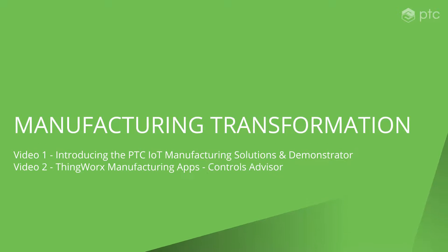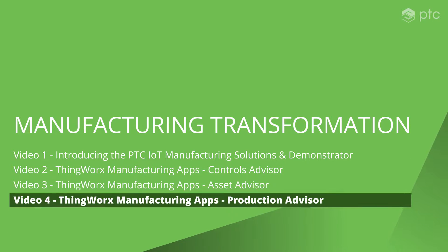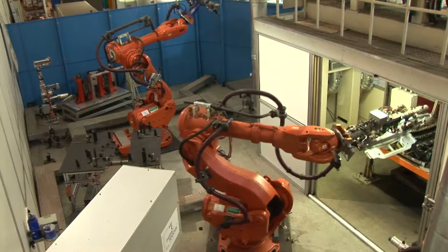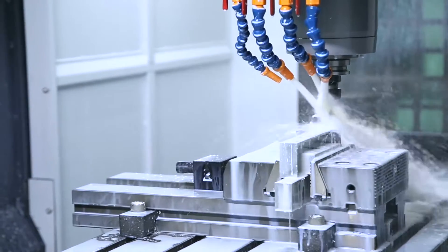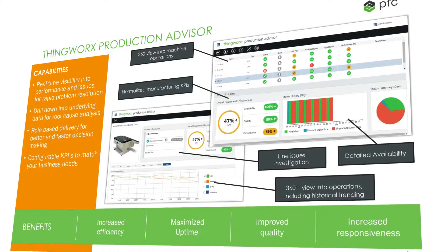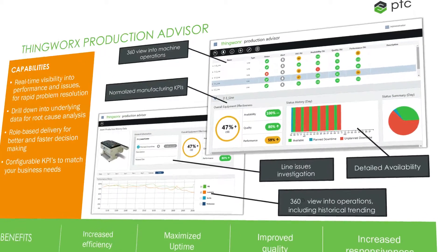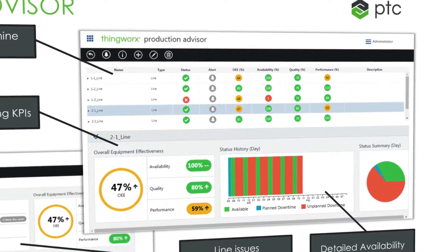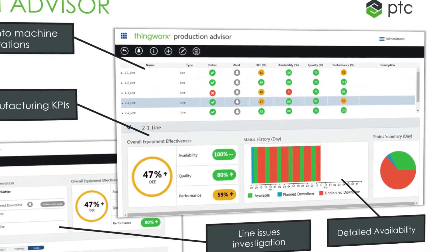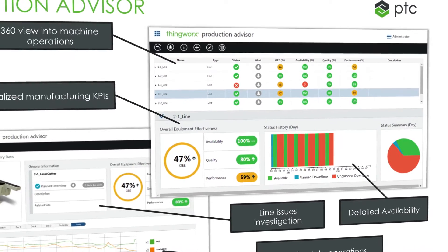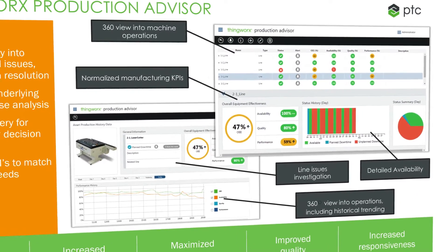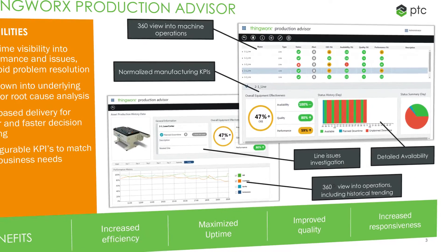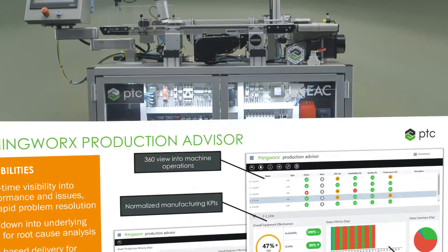With unified connectivity to disparate factory assets and business systems, ThingWorx Production Advisor brings a new level of visibility and flexibility into production performance monitoring and issue detection. Built on the ThingWorx IoT platform, this powerful app helps companies make decisions quickly by connecting and unifying different sources of internal and external data to deliver unified connectivity and real-time issue identification in a role-based view specifically designed for plant managers and teams.